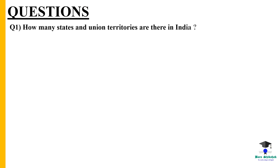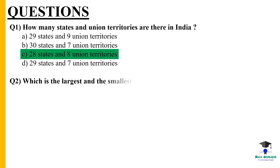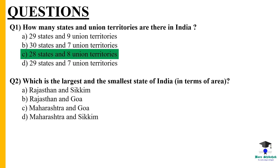Questions. Question 1: How many states and union territories are there in India? The correct answer is 28 states and 8 Union Territories. Question 2: Which is the largest and the smallest state of India in terms of area? The correct answer is Rajasthan and Goa.